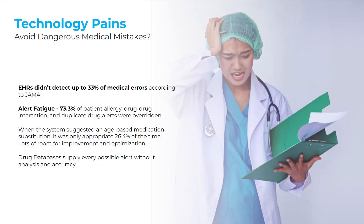Drug databases like First DataBank have an extensive list of every possible interaction and supply that to the EHR. What I see is that EHR companies don't want to pare that down or make it easier for clinicians by blocking out useless pop-ups. They push every single possible notification and force the doctor to override them. EHR companies claim they're erring on the side of caution, but in reality they're afraid of liability for failing to display these interactions, and they lack the clinical expertise to improve usability for doctors.